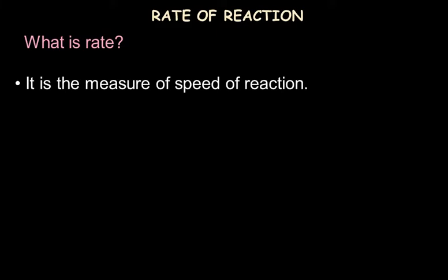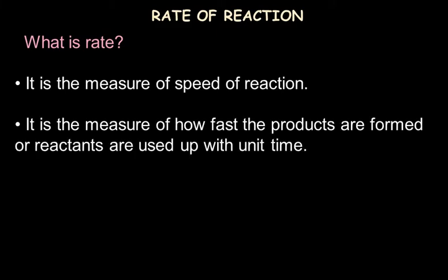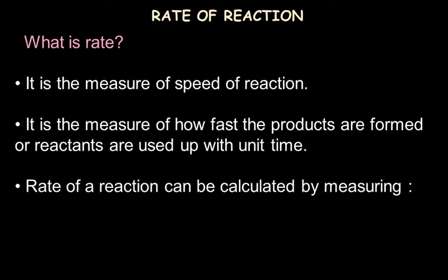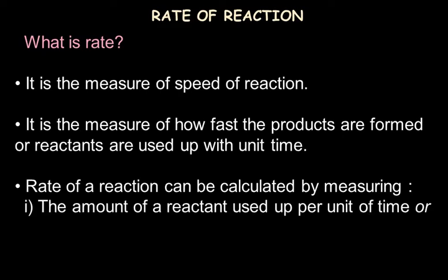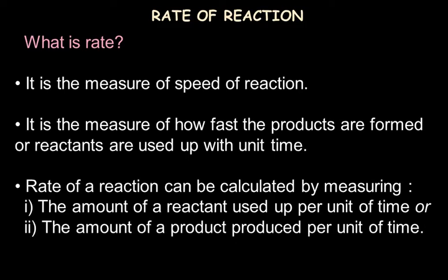Rate is a measure of the speed of reaction — that is how fast the reaction is. We can measure it by how fast the products are formed or how fast the reactants are used up per unit time. Rate of reaction can be calculated by measuring the amount of reactants used up per unit time or the amount of products produced per unit time.